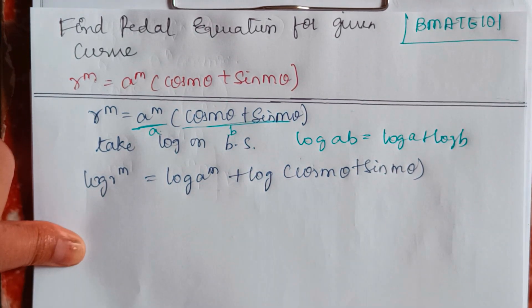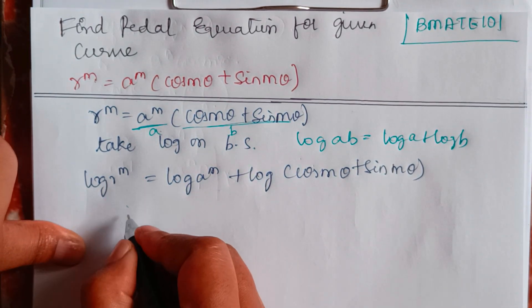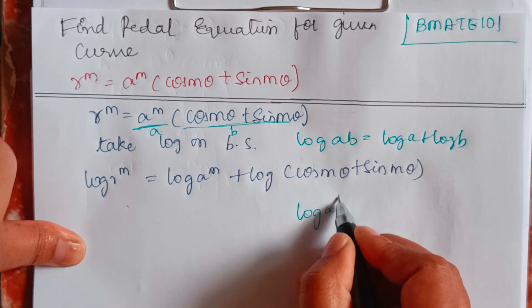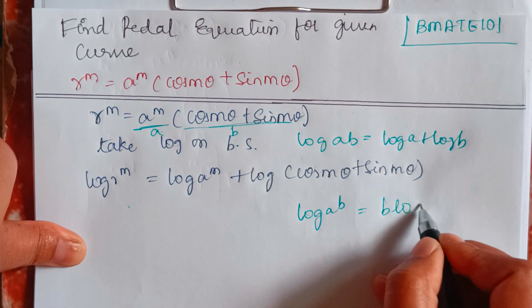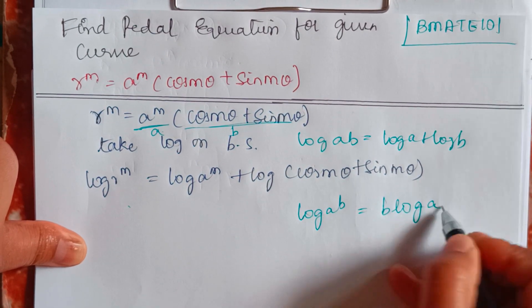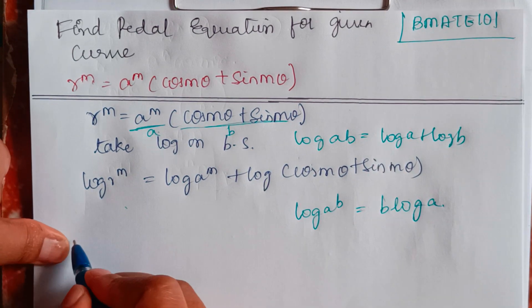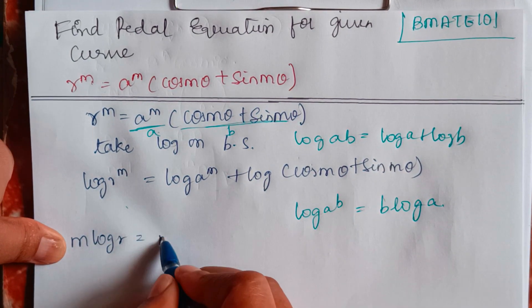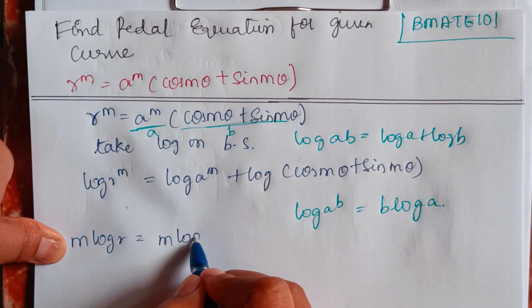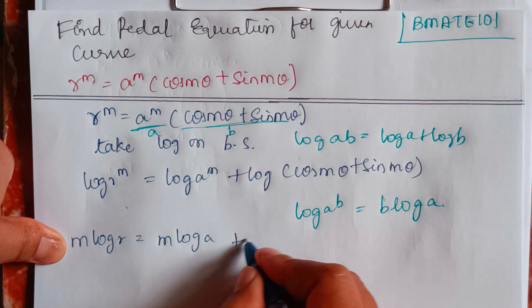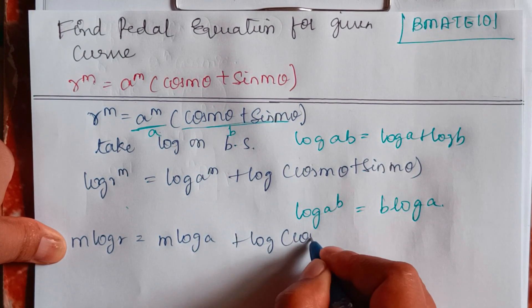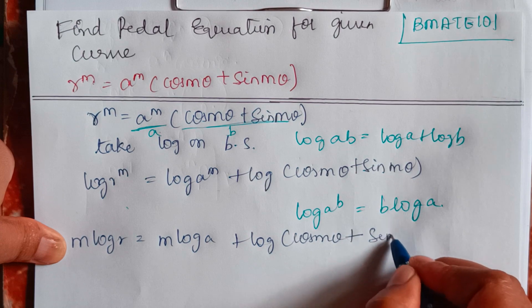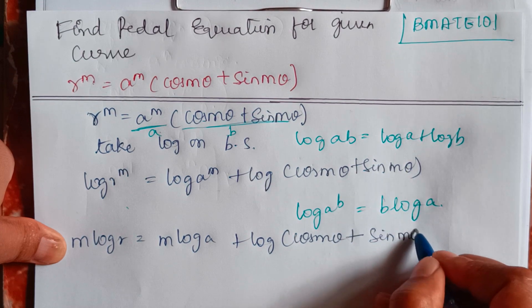Now, one more formula: log a to the power b can be written as b log a. So I will write it as m log r equals m log a plus log(cos mθ + sin mθ).